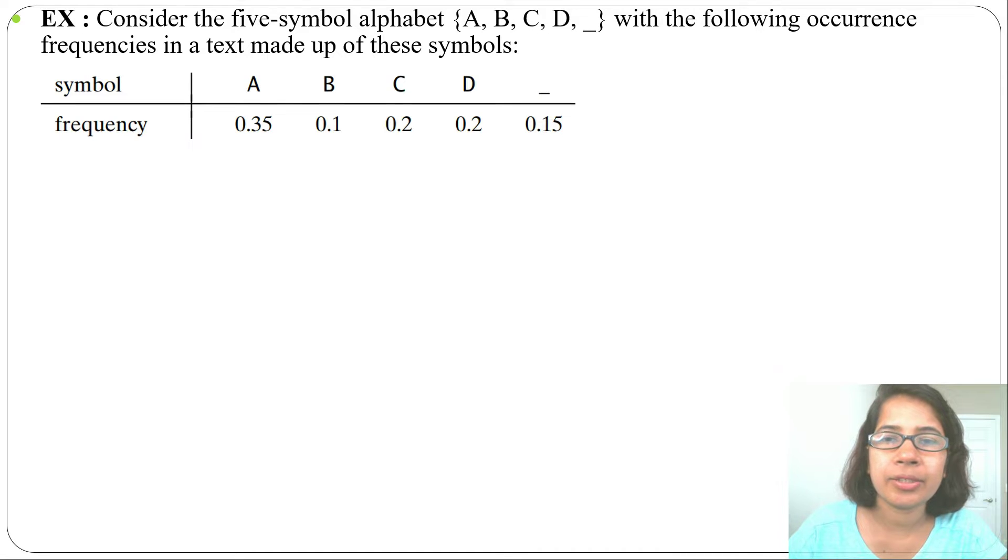Hi, in the previous lecture I discussed Huffman coding. Let's discuss one example of it. Consider the five-symbol alphabet A, B, C, D, and underscore with the following occurrence frequencies in a text made up of these symbols. For A, frequency is 0.35; for B, frequency is 0.1; for C, frequency is 0.2; for D, frequency is 0.2; for underscore, frequency is 0.15.